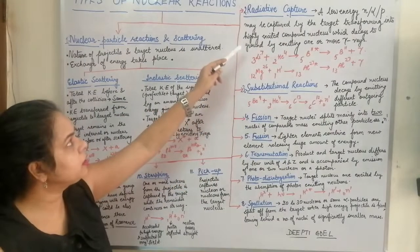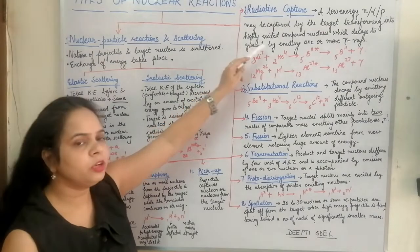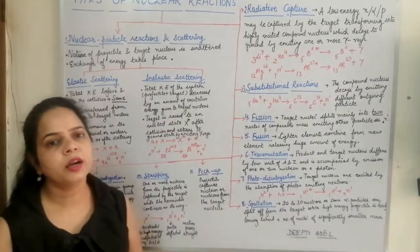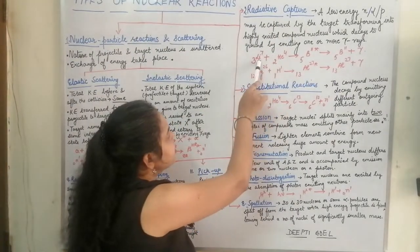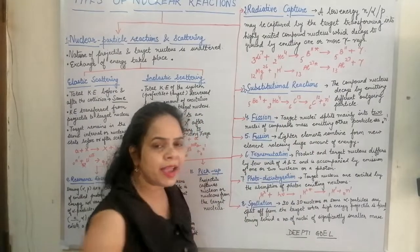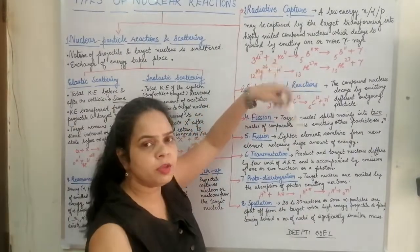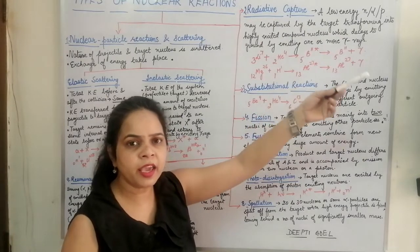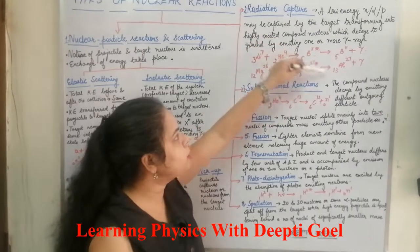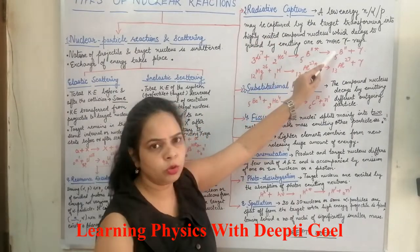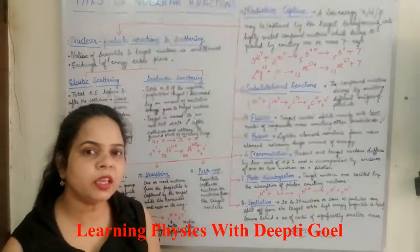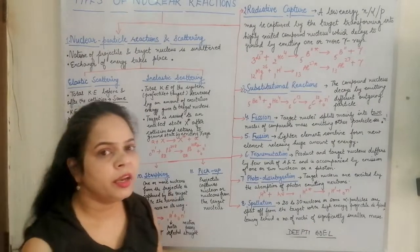A low-energy particle may be captured by the target, transforming into a highly excited compound nucleus which decays to the ground state by emitting one or more gamma rays. For example, helium strikes lithium and a proton strikes magnesium to form excited boron and excited aluminum. These excited states do not decay by emitting particles but emit gamma rays, returning to the boron and aluminum ground states respectively.